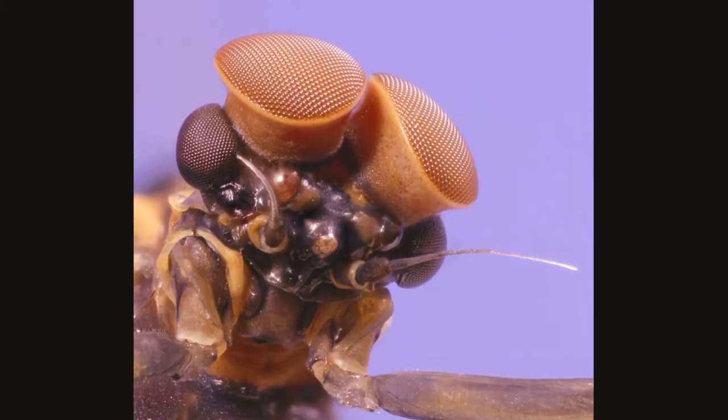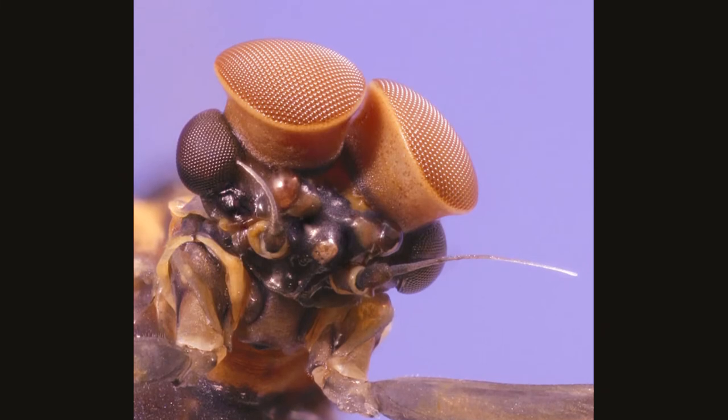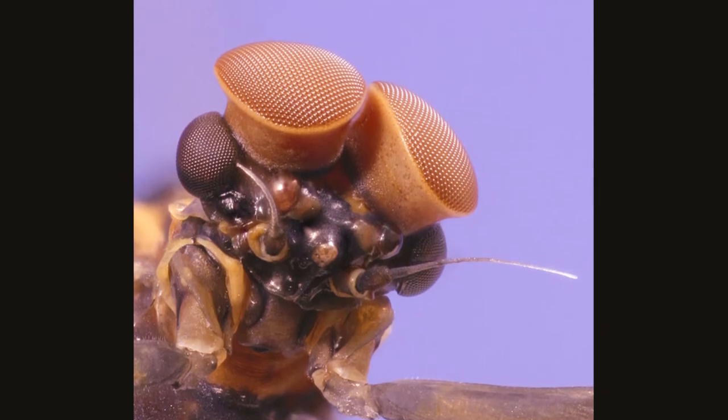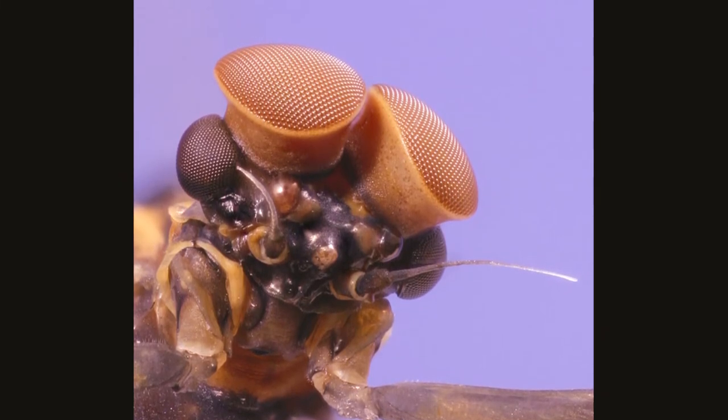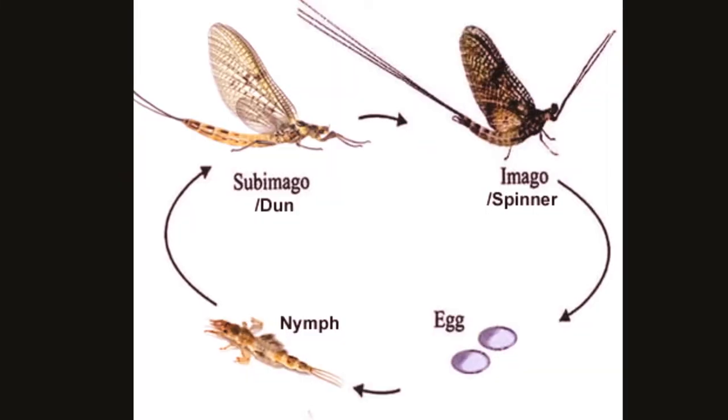Winged Mayflies have large compound eyes, short bristle-like antennae and functionless mouthparts and digestive tracts.